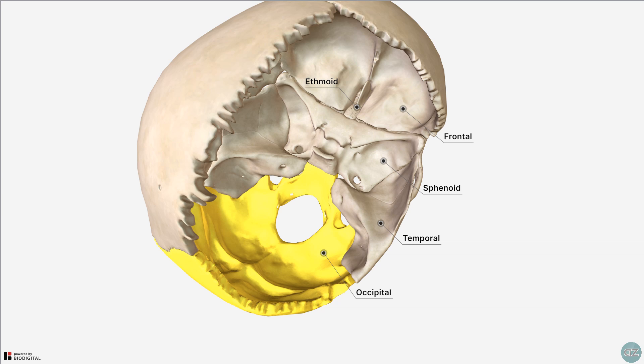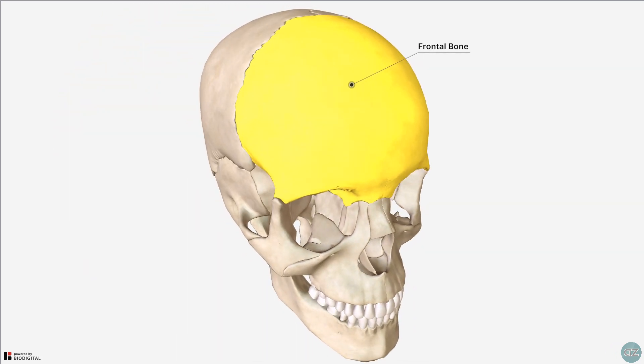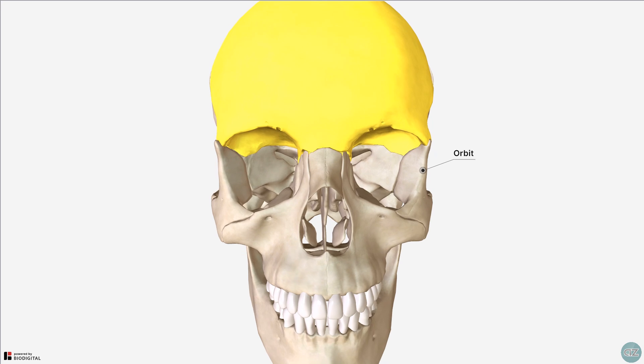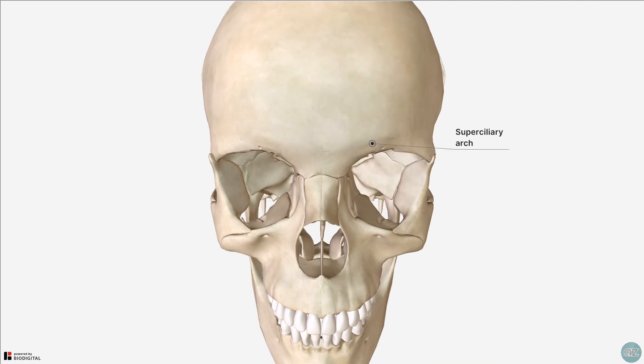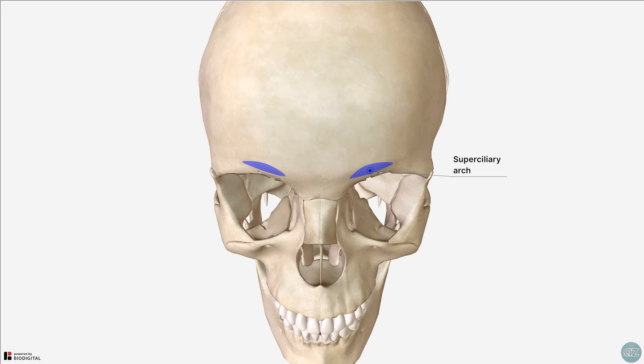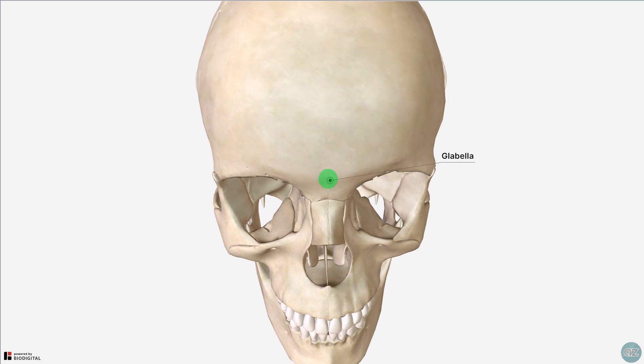So let's now look at how the calvarial bones are connected and at some of their important features. The frontal bone makes up the forehead and forms the superior part of the rim of the orbit. I have done a separate tutorial on the anatomy and boundaries of the orbit for further information on this topic. The supraciliary arches are superior to the rim of the orbit bilaterally. The glabella is the name given to the depression between the supraciliary arches, and you can palpate this on yourself in between your eyebrows.